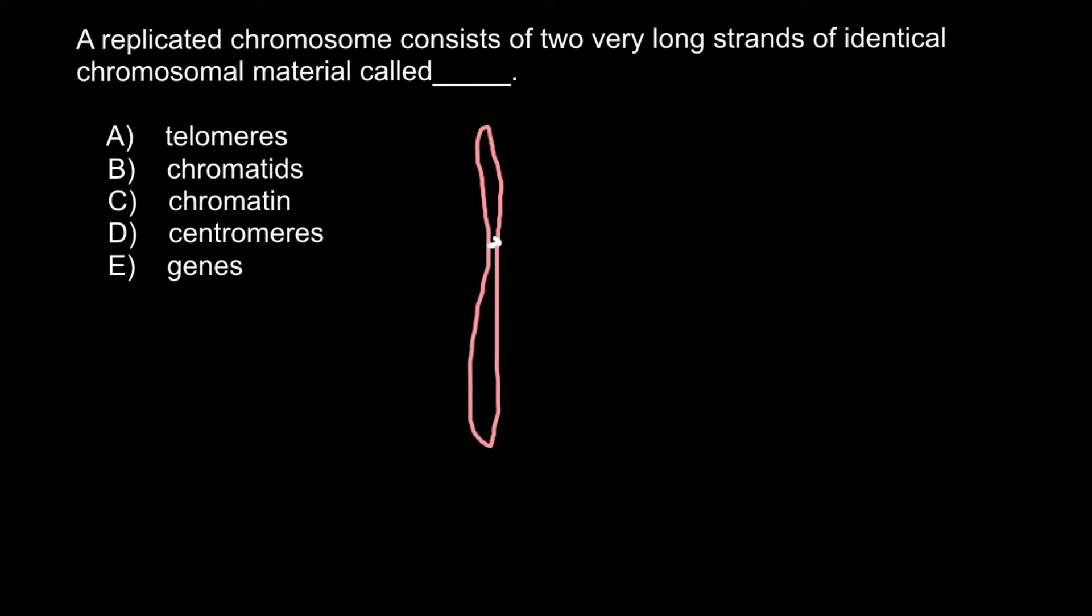The position of the centromere may vary depending on the pair of chromosomes. It can be in some pairs in the middle, close to the middle, or close to the end of the chromosome. So this is centromeres.